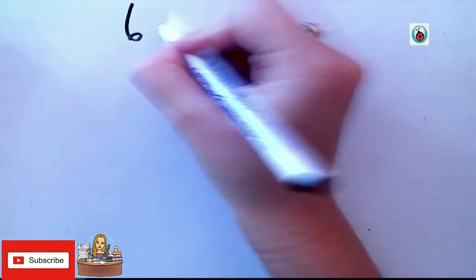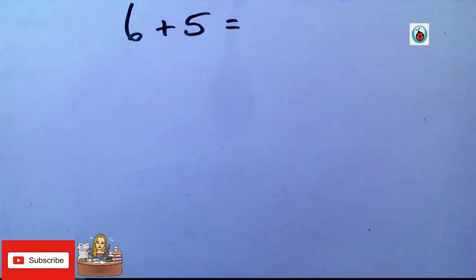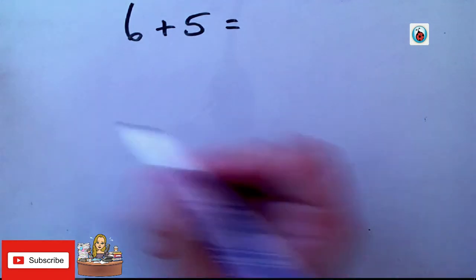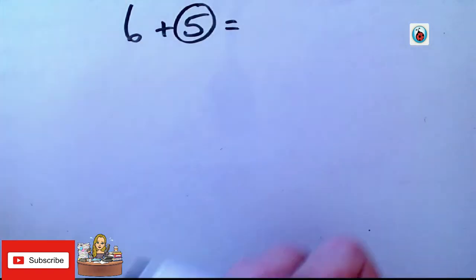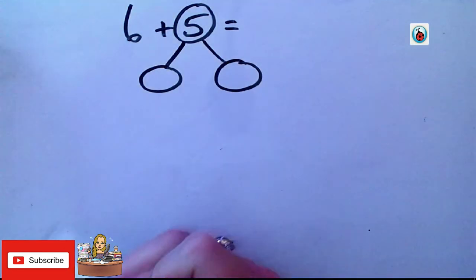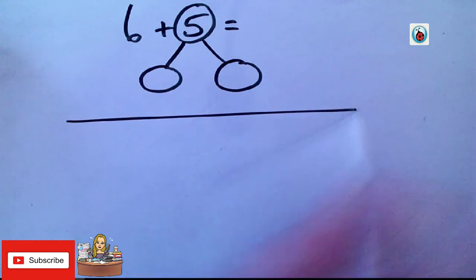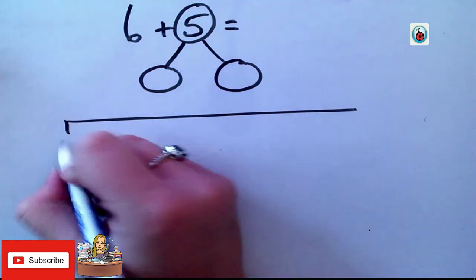Let's do 6 add 5 equals something. So, again, pause the video and have a go and then we'll go through it. So, again, I'm going to partition 5 into 2 different numbers so it's easier to work with. Draw my number line. What do I start on? Good. I start on 6.